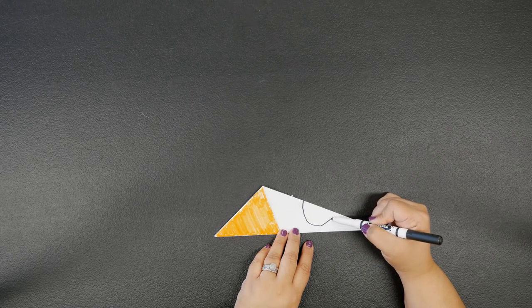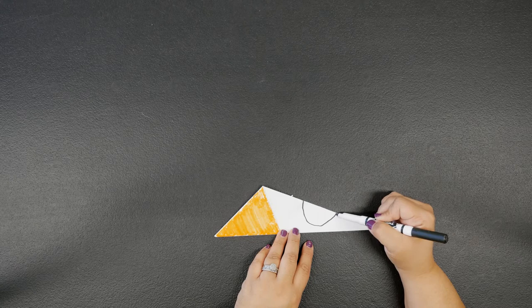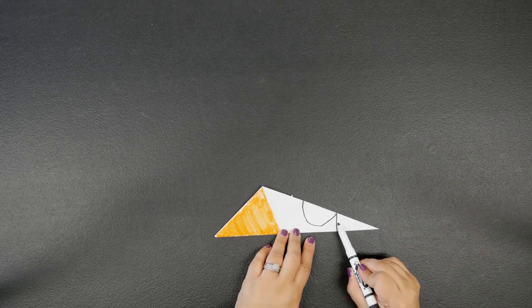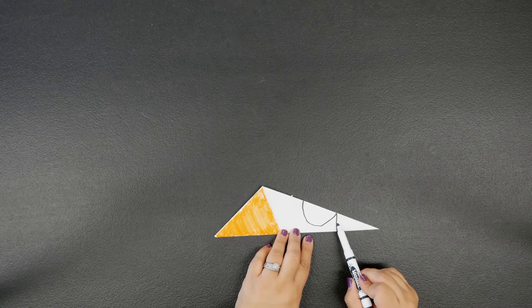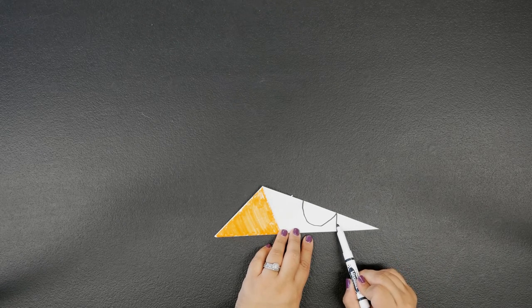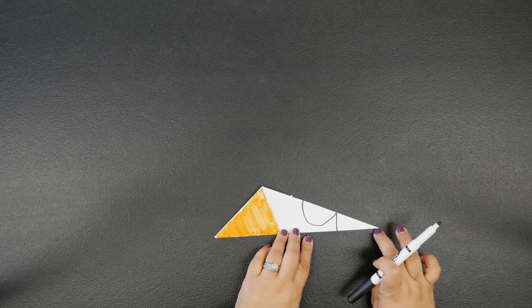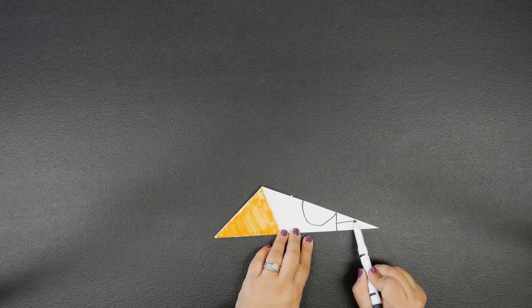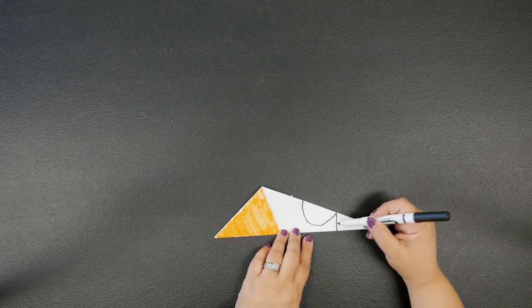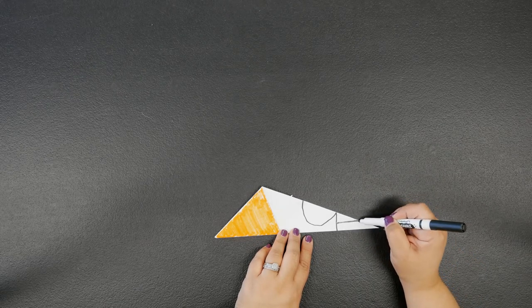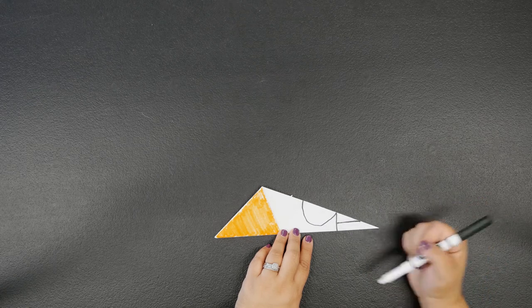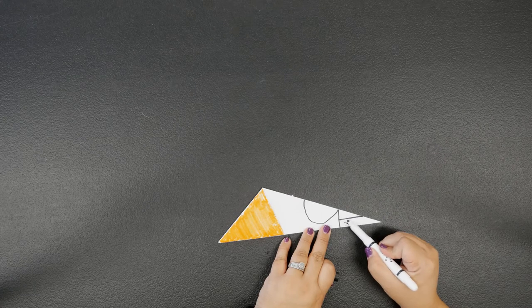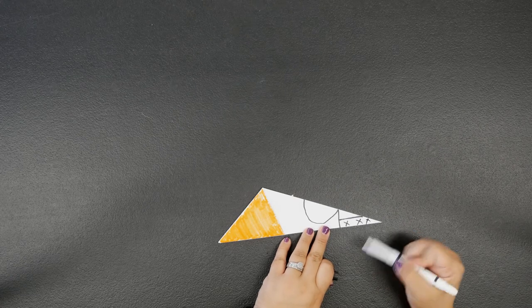Now at the bottom of the two we're going to work on our number one. Our number one won't connect all the way to the end of the tail, it'll be a little bit off there just to the side, just like this. So we drew a two and a one. Now this portion here I'm going to draw a few Xs because this will be cut off.